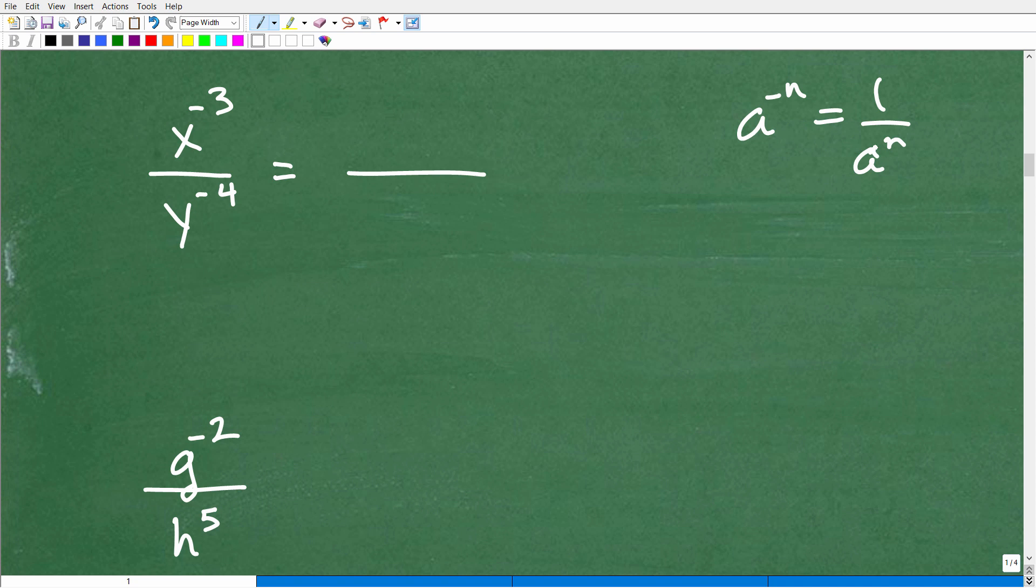What we want to do is get rid of the negative exponents. So we can do that by just moving. If it has a negative exponent, we can just move it to the opposite side of the fraction bar, and it will change the sign.